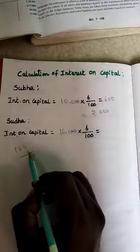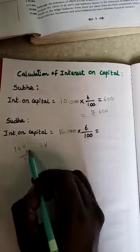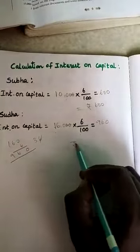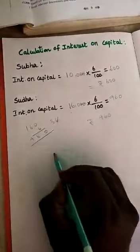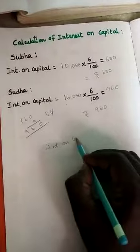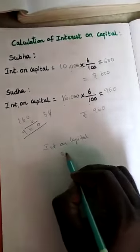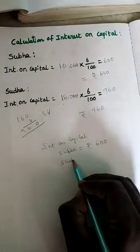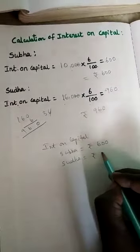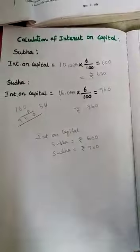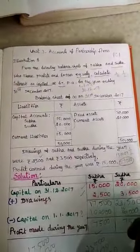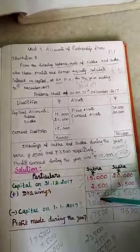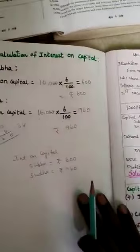So Subha's interest on capital = ₹600 and Sudha's interest on capital = ₹960. In this sum, we were given a closing-dated balance sheet. From that, using the available data, we calculated the opening capital first. From the opening capital, we calculated the interest on capital.